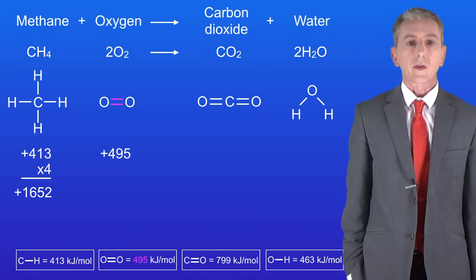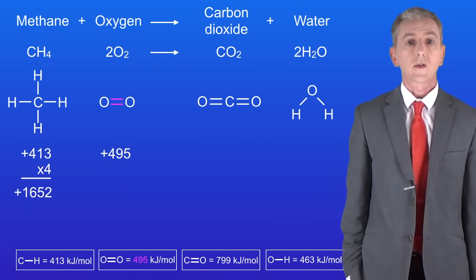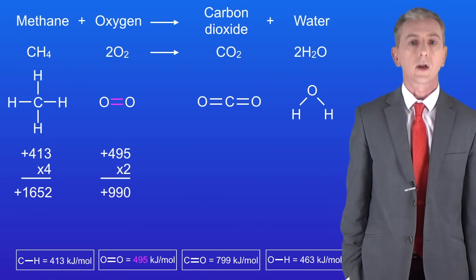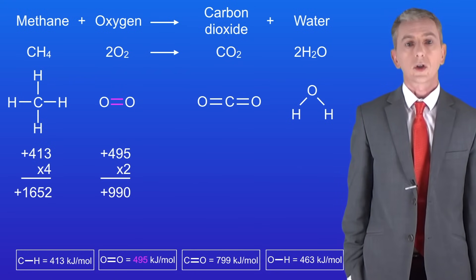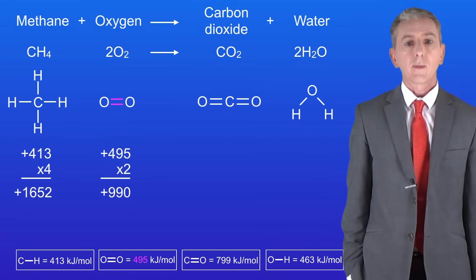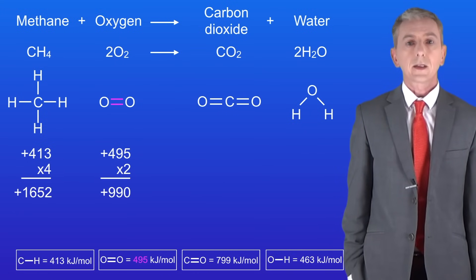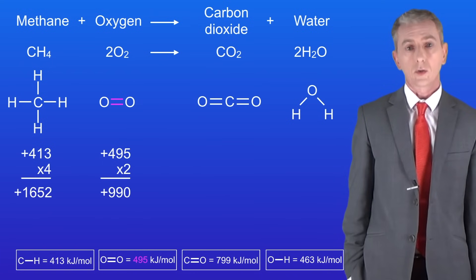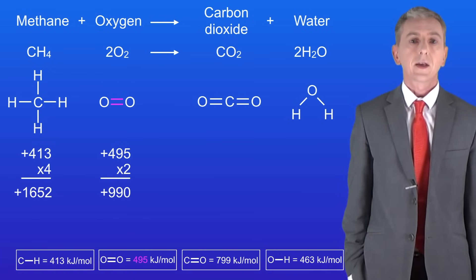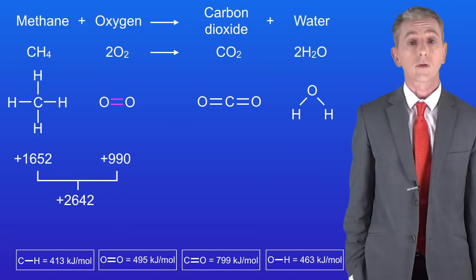We've also got to break the double bond in the oxygen molecule. The bond energy of this is 495 kilojoules per mole. However, we've got two molecules of oxygen so we've got to multiply this number by two, giving us 990 — and remember that this also has to be positive. Adding together 1652 and 990 gives us a total bond energy of plus 2642.